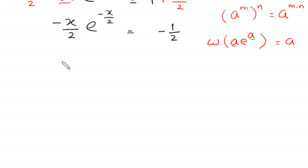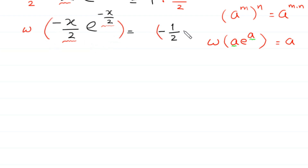Now, as you can see, here we have the same expression negative x over 2 and the same expression here negative x over 2. We can now apply the Lambert W function on both sides. According to the W function, W of a times e to the power a equals a. So W of negative x over 2 times e to the power negative x over 2 is equal to negative x over 2.